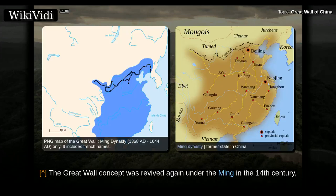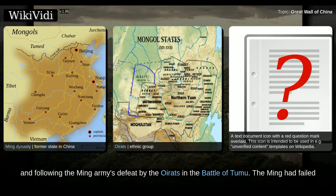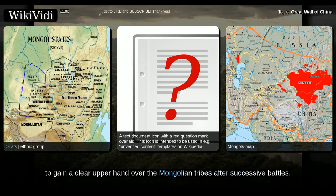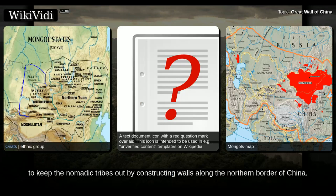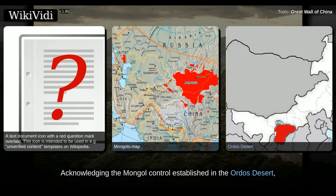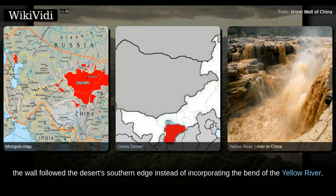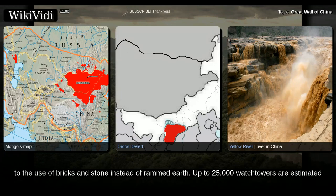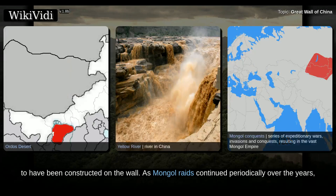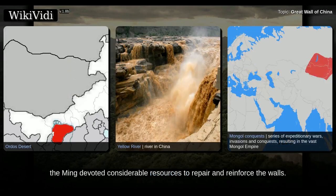The Great Wall concept was revived again under the Ming in the 14th century, and following the Ming army's defeat by the Oirats in the Battle of Tumu, the Ming had failed to gain a clear upper hand over the Mongolian tribes after successive battles, and the long-drawn conflict was taking a toll on the empire. The Ming adopted a new strategy to keep the nomadic tribes out by constructing walls along the northern border of China, acknowledging the Mongol control established in the Ordos desert. The wall followed the desert's southern edge instead of incorporating the bend of the Yellow River. As Mongol raids continued periodically over the years, the Ming devoted considerable resources to repair and reinforce the walls.